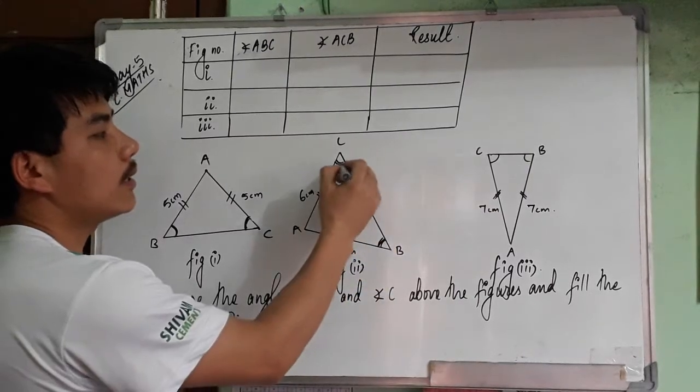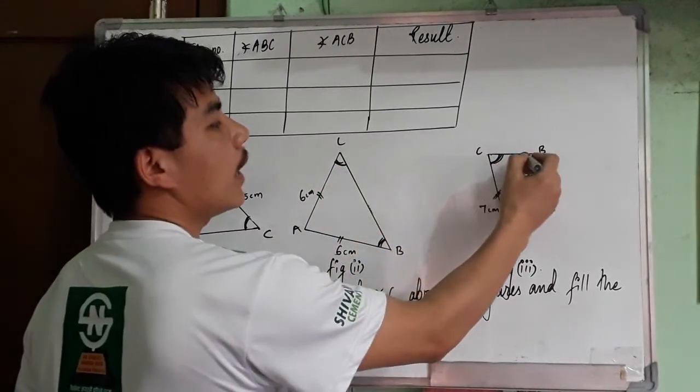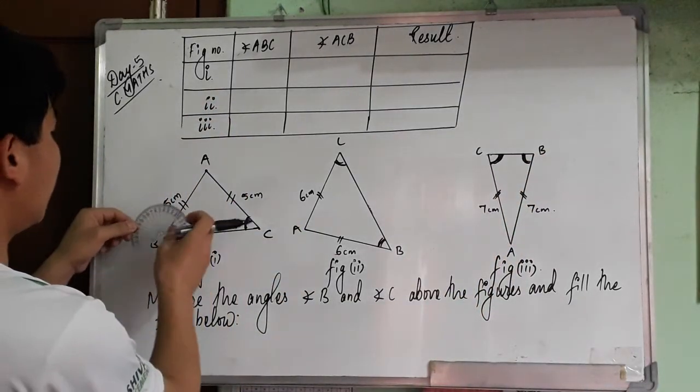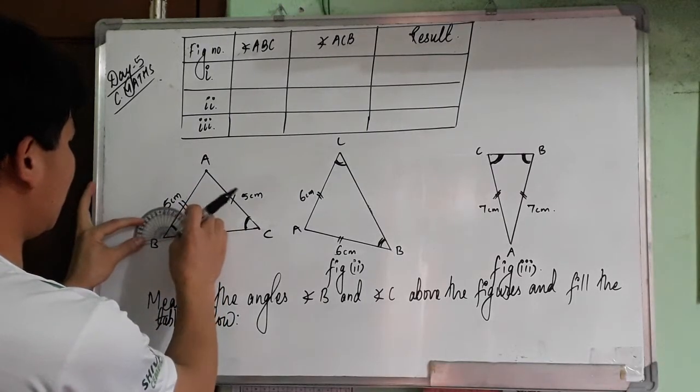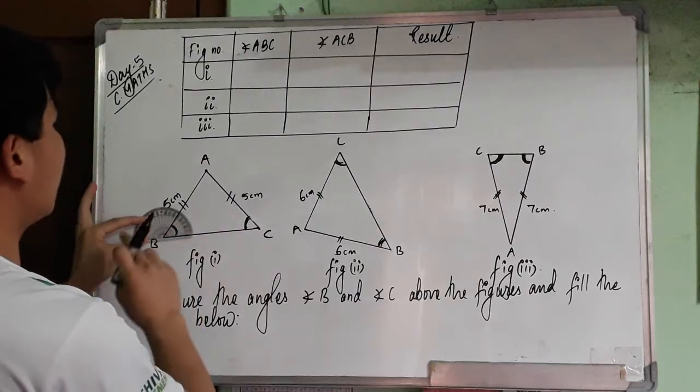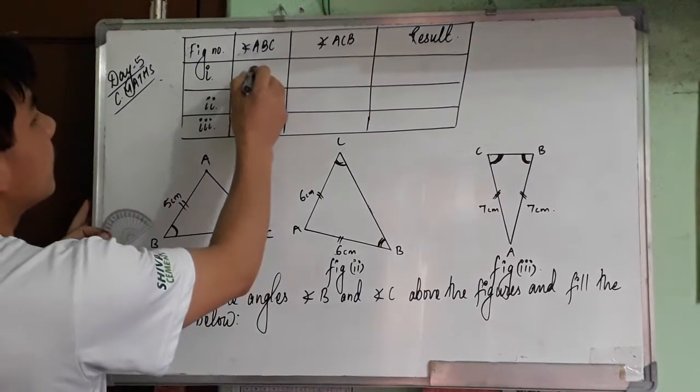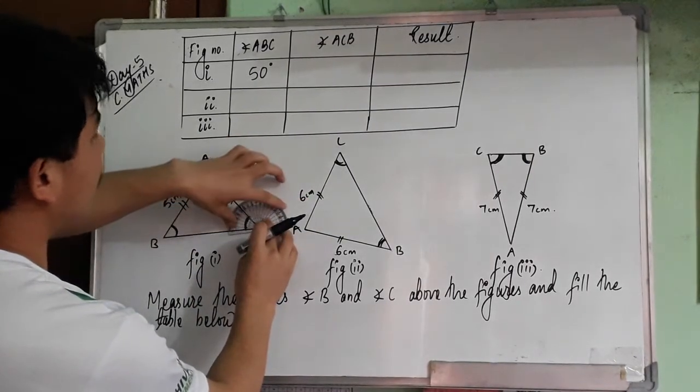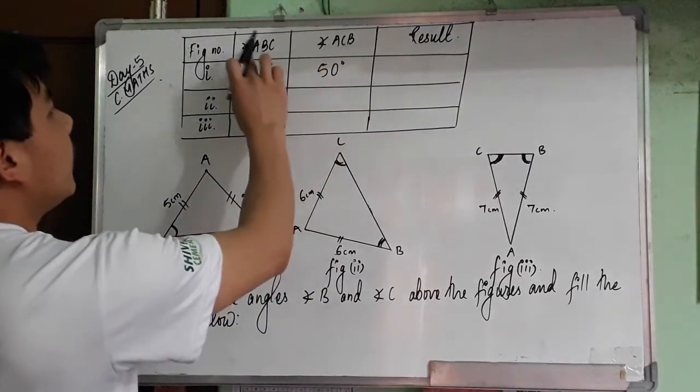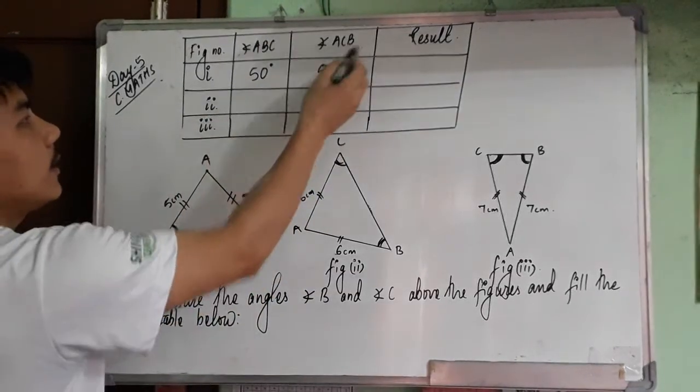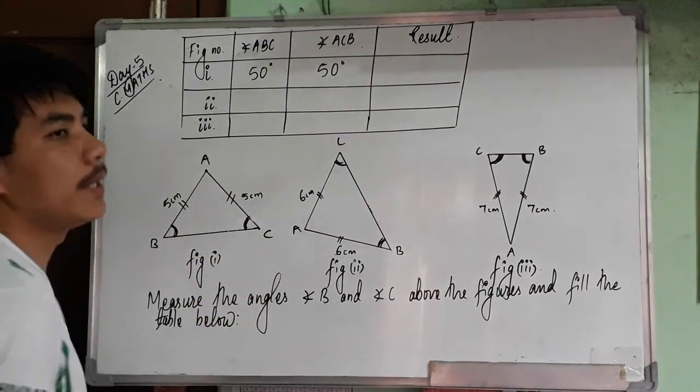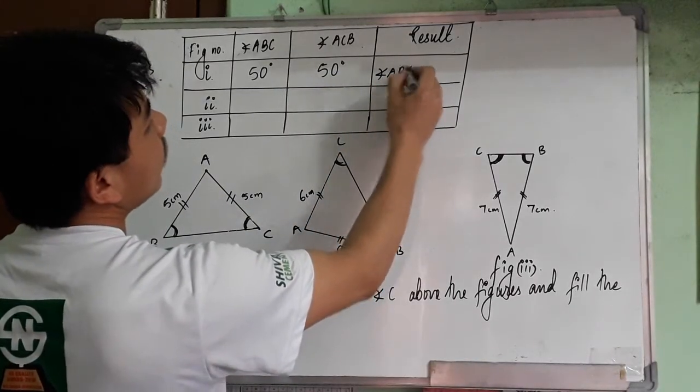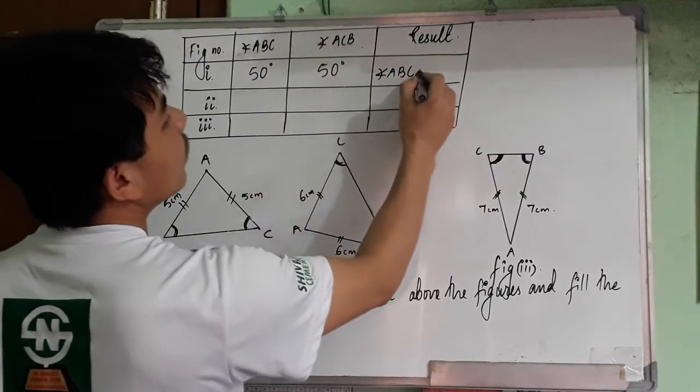Triangle B is the base angle, angle C is the base angle. Angle B and C are base angles. This angle and this angle. These angles are 50 degrees. This is also 50 degrees. ABC, when you bring your angle ACB, both are 50-50. When the base angles are equal, in your first figure, angle ABC and ACB are equal.